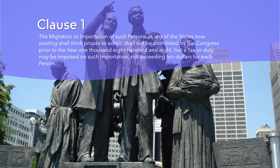But make no mistake, we are talking about people and slavery here. The clause also shows the contradiction between the ideals of liberty and equality that the Constitution proclaimed and the reality of slavery that it tolerated. The clause did not use the word slave or slavery, but instead referred to them as persons who could be imported or taxed. This was a way to avoid acknowledging the legitimacy or morality of slavery in the Constitution.